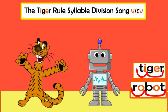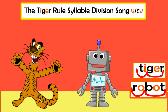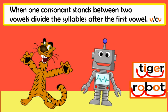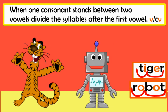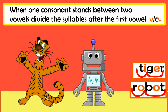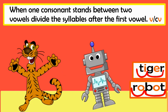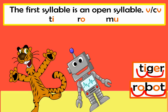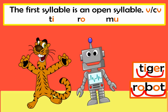Tiger rule, syllable division with the tiger rule. When one consonant stands between two vowels, divide the syllables. After the first vowel, the first syllable is an open syllable.